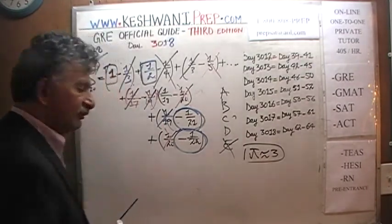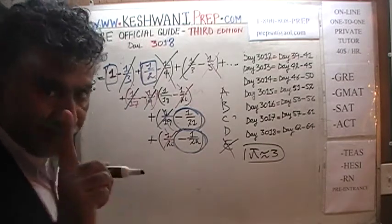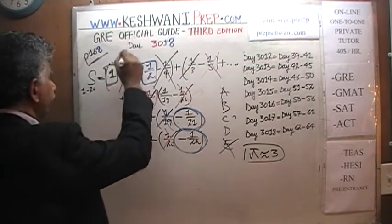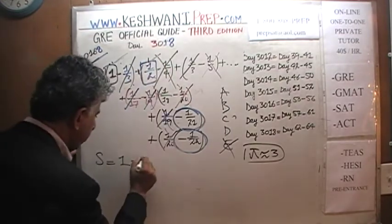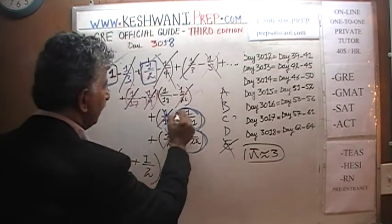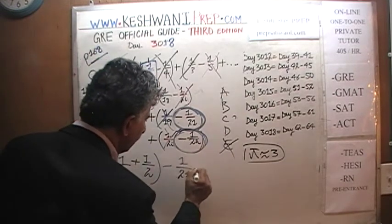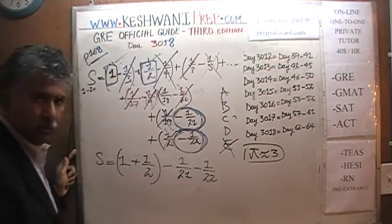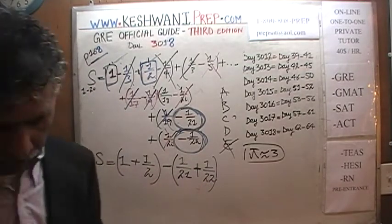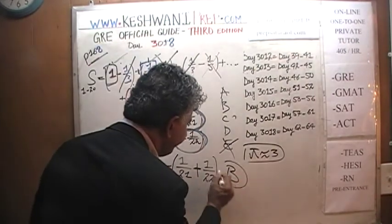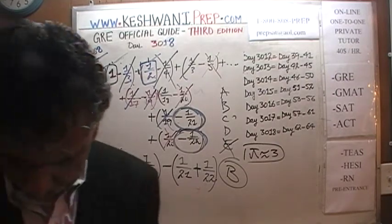So the final answer is: the sum of these 20 terms is 1 plus 1/2 minus 1/21 minus 1/22, which we can write as 1 plus 1/2 minus (1/21 + 1/22). That is answer choice B. I almost messed it up in the beginning — it's always a good idea to pay attention.